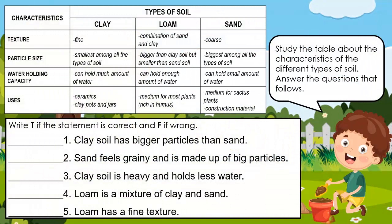Study the table about the characteristics of the different types of soil. Answer the questions that follow. Write P if the statement is correct and F if wrong. 1. Clay soil has bigger particles than sand. 2. Sand feels grainy and is made up of big particles. 3. Clay soil is heavy and holds less water. 4. Loam soil is a mixture of clay and sand. 5. Loam has a fine texture.